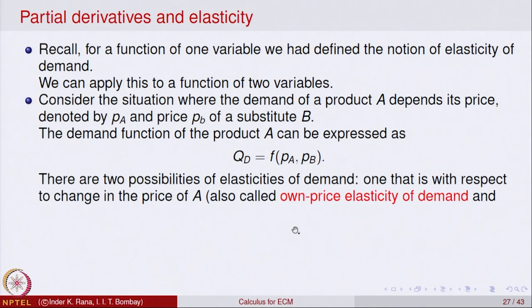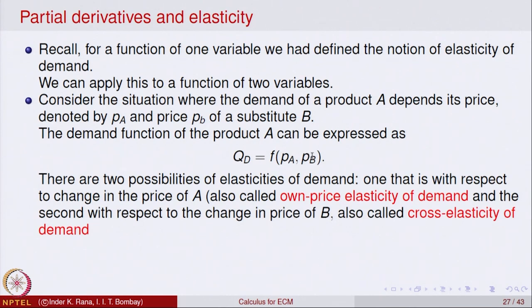There are two types of elasticity of demand for such a function of two variables. With respect to the change in the price of A itself, this is called the own-price elasticity of demand. With respect to the change in the price of substitute B, this is called the cross elasticity of demand.